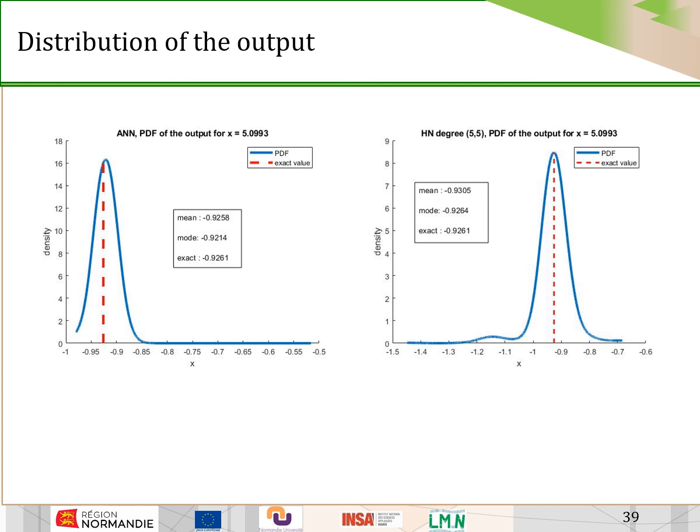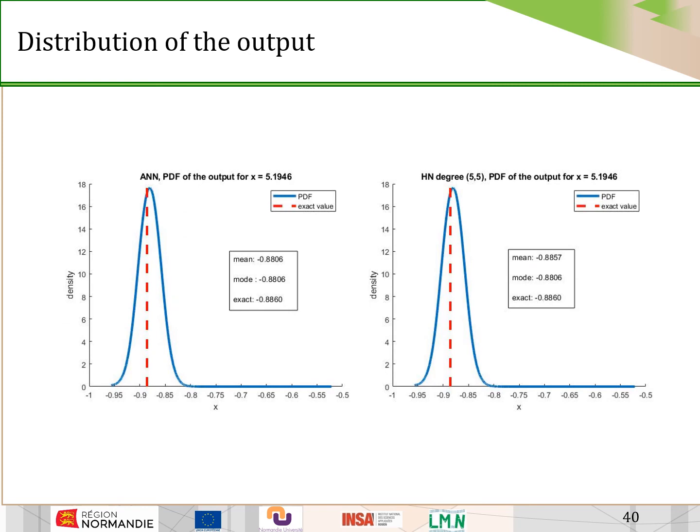The distribution of the output can also be examined. Here we show the probability distribution of the output for a fixed value of x — on the left the neural network and on the right the Hilbert network. Here again is the distribution but for another point. As we can see, the results are similar for both approaches.